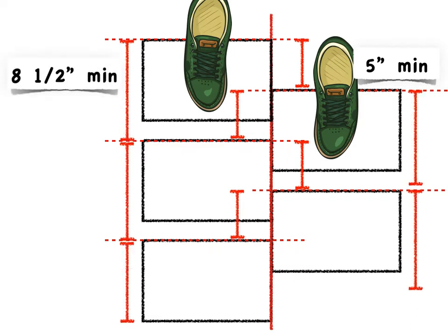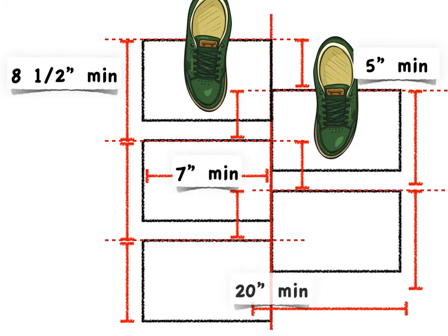And there's this 8.5-inch minimum projected tread depth. It's the clear space for each foot on each side to rise without hitting the underside of the nosing of the tread above on the same side, and it also allows for a forward-facing descent. Now each tread has got to be at least 7 inches wide. And then finally the clear width at and below the handrails can't be less than 20 inches.